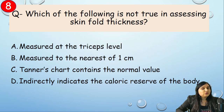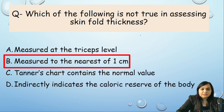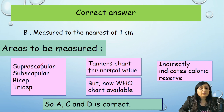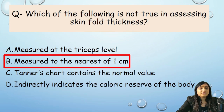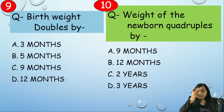Which of the following is NOT true in assessing skinfold thickness? Options: measured at tricep level, measured to nearest one centimeter, Tanner's chart contains normal values, or it indirectly indicates caloric reserve. Skinfold is measured at tricep, suprascapular, subscapular, and bicep levels. Tanner's chart (and now WHO chart) contains normal values. It does indirectly indicate caloric reserve. However, it is NOT measured to the nearest one centimeter — so option B is incorrect.